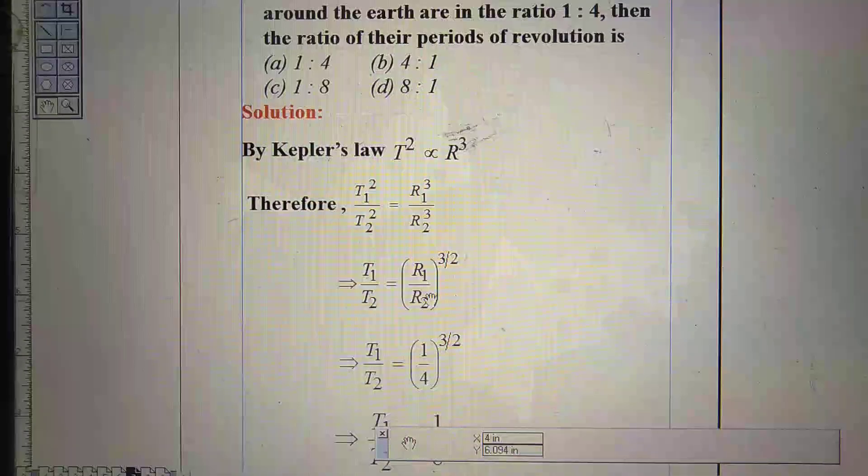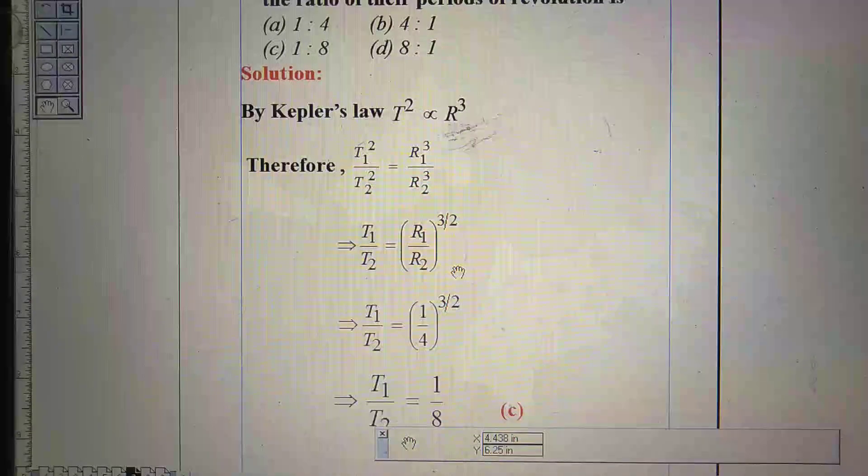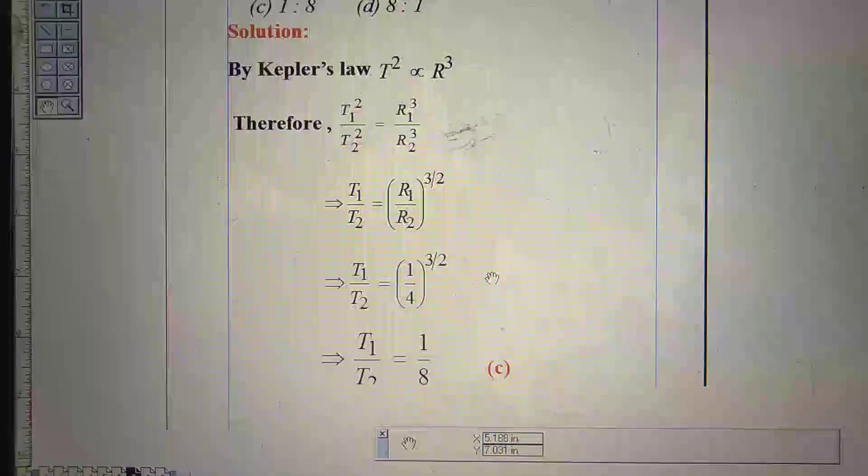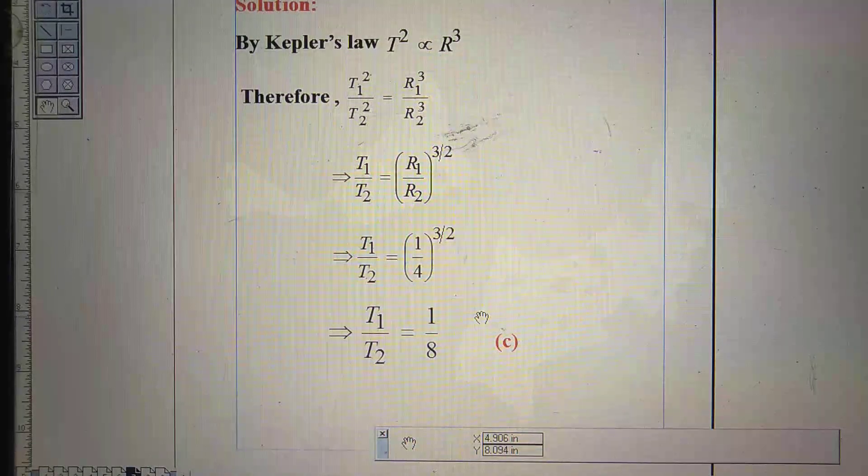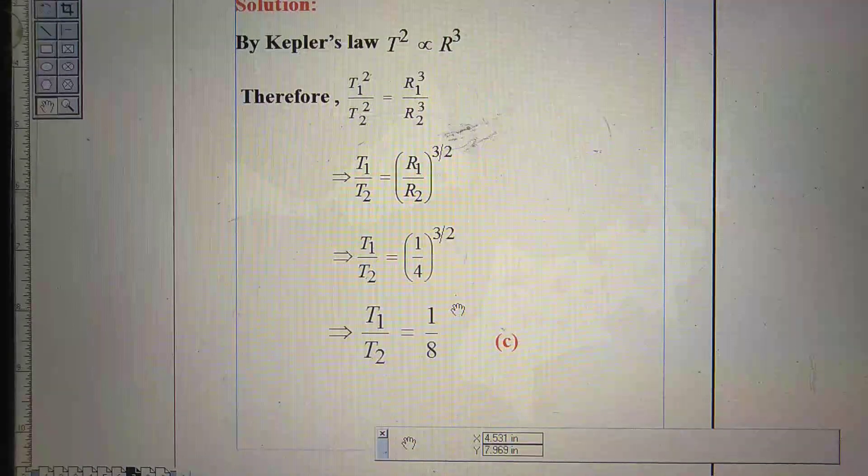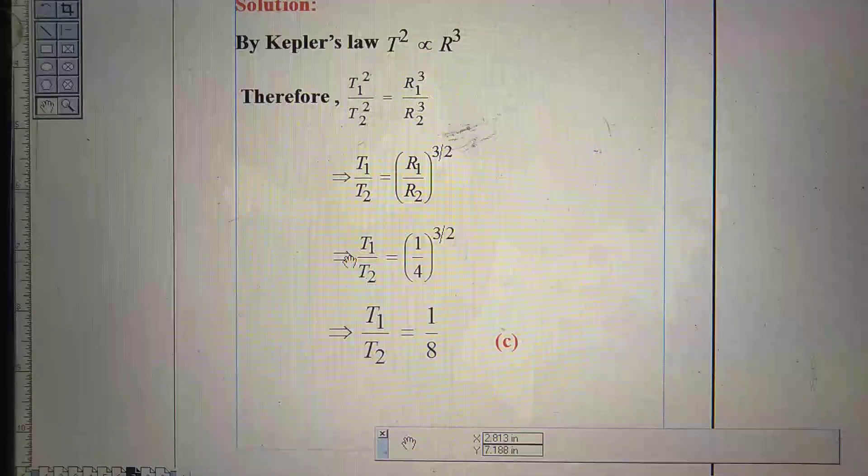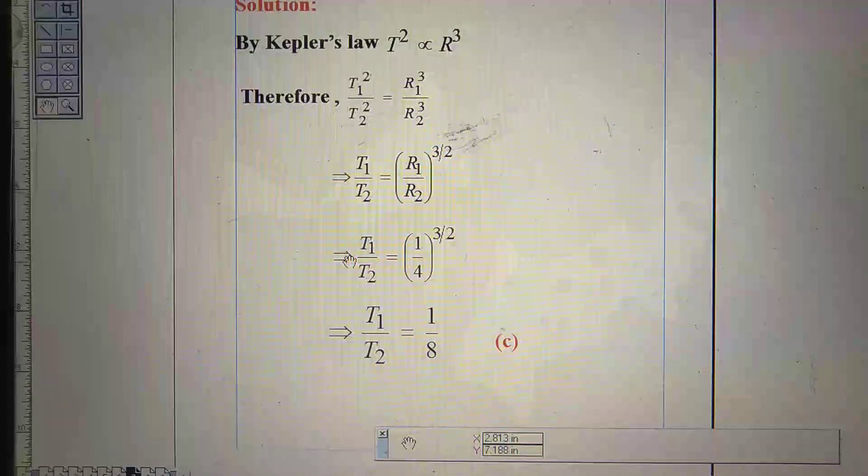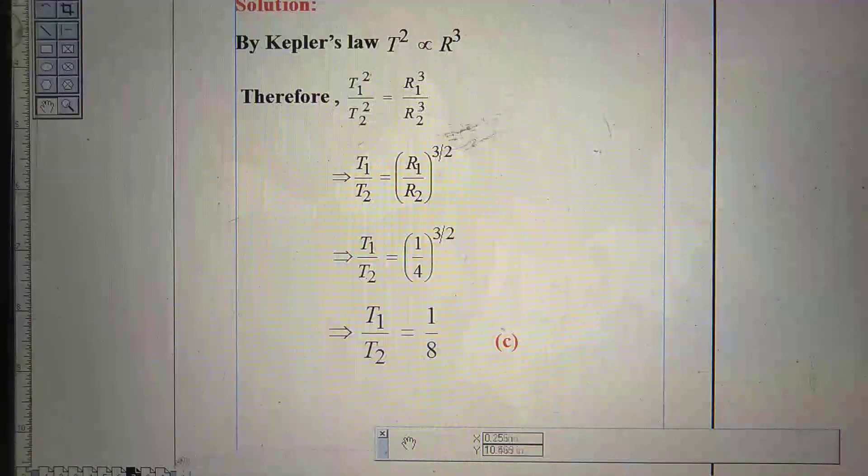T1 square by T2 square equal to R1 cube by R2 cube. Therefore, T1 by T2 equals R1 by R2 to the power 3 by 2. Insert the values of R1 and R2. After calculation, we find T1 by T2 as 1 by 8. So, our correct answer is C, that is 1 is to 8.